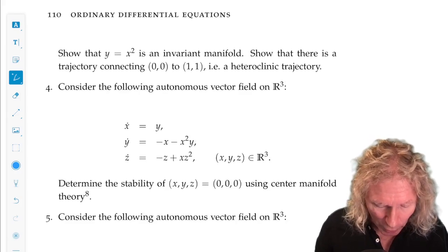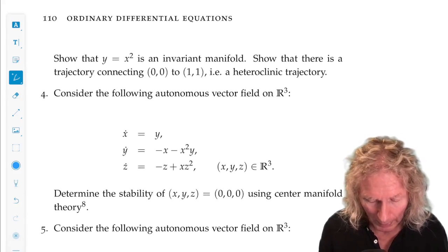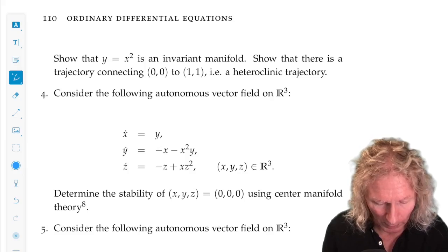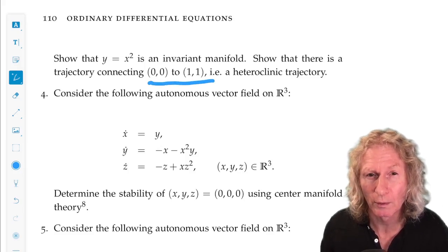And then show, use that to show there is a heteroclinic trajectory connecting these two different equilibria.